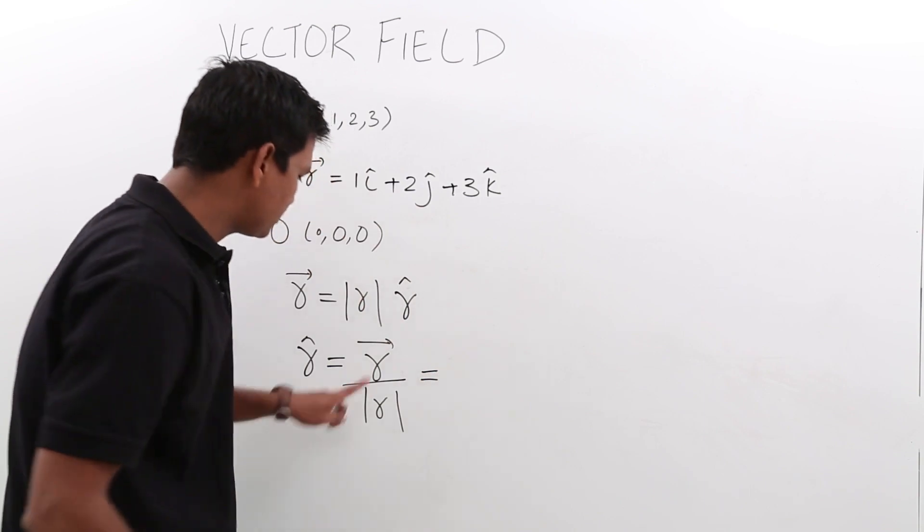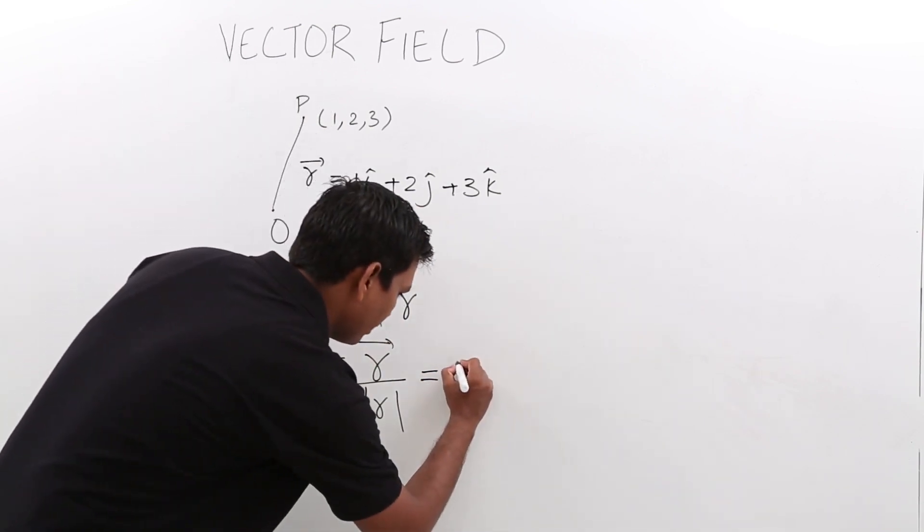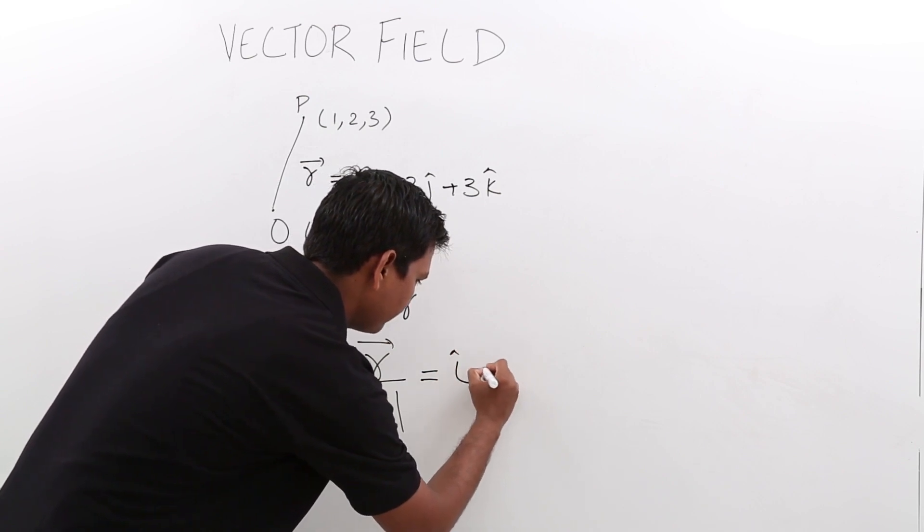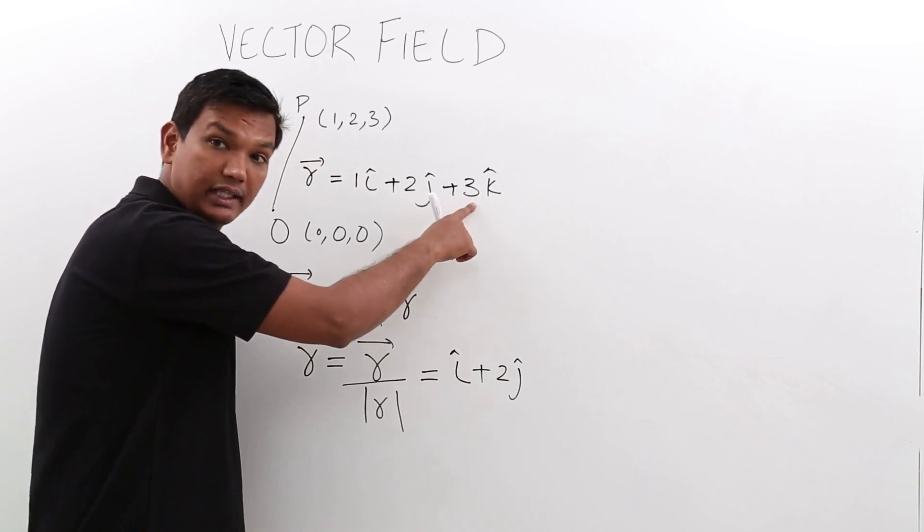What is my r vector? We just calculated the r vector as i cap plus 2 j cap plus 3 k cap.